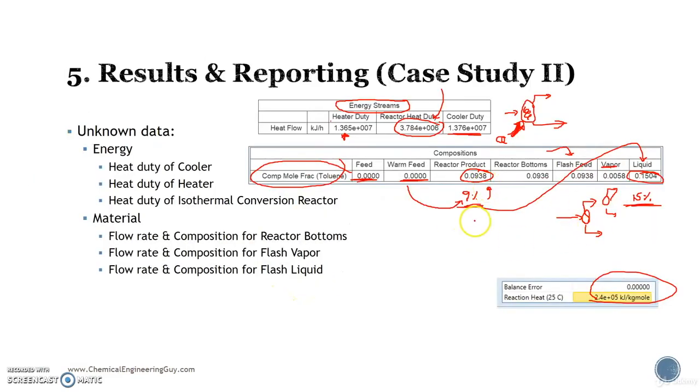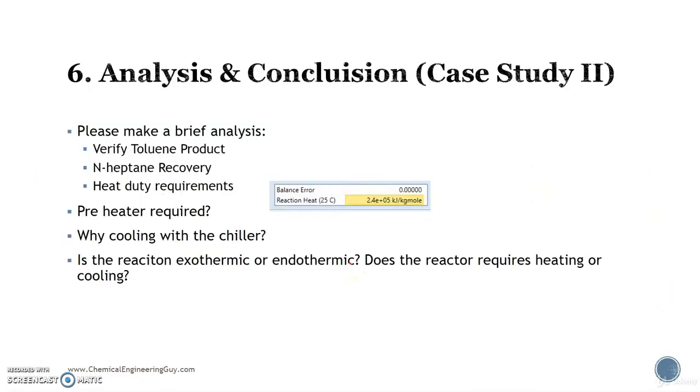Final analysis and conclusion will be that maybe this process is not good enough. The toluene product will not be able to sell itself. If you sell a 15 percent toluene, well, you don't want that solvent. You want 95 or even higher percentage of toluene. N-heptane recovery - there's actually no recovery because it's getting lost in the vapor phase right here.